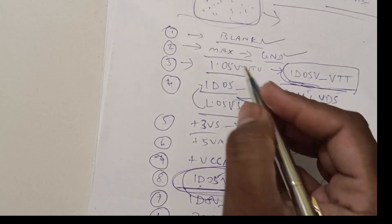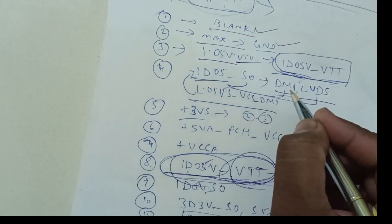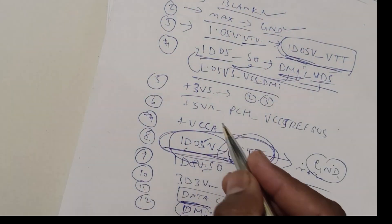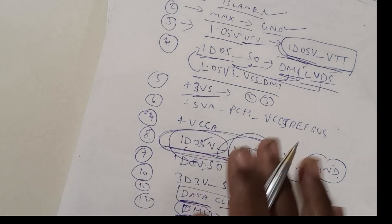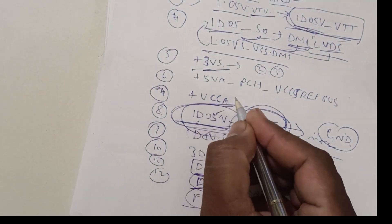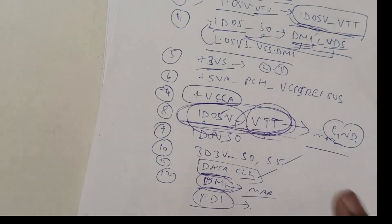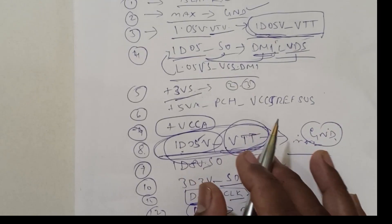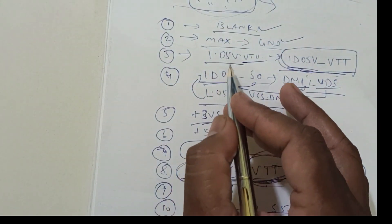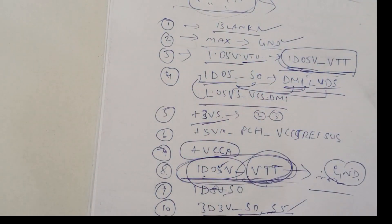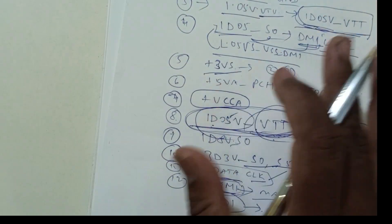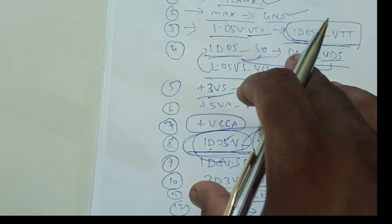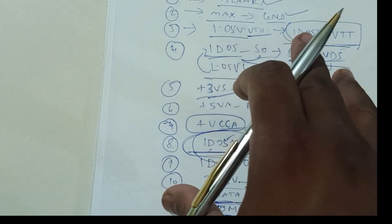Other than that, 1D05 S0, DMI, LVDS. And other than that 3VS, one or two voltage, VCC SA, VCCA. Other than that S0, S5. Nothing else. Here is the maximum voltage covered in PCH.